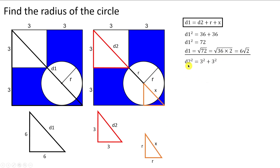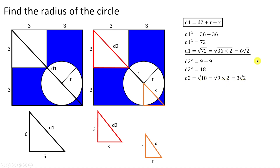Using the same reasoning to find d2: d2² = 3² + 3² = 9 + 9 = 18, so d2 = √18. Since 18 = 9 × 2, we can rewrite √18 as 3√2. So d2 = 3√2.